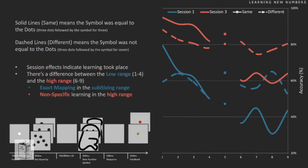Looking at the behavioral accuracy: in the first four numbers, participants actually start learning — they learn the first one pretty quickly in session one, and by session two they're getting quite good. In the higher range, we see more or less flat lines. They do learn a bit, but it's more of a generic effect — knowing it's a high symbol gives slightly better odds of getting the right answer. But behavior alone doesn't tell us exactly what's going on.